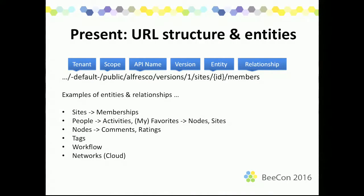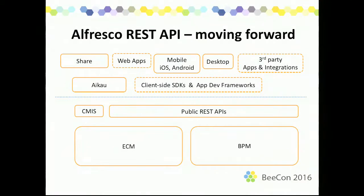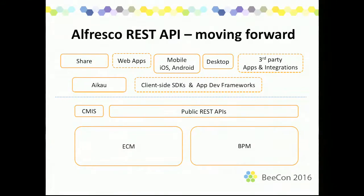Here's a summary slide of the high-level box architecture — ECM on the left and BPM on the right, with public REST APIs moving forward across both. On the client side there are options for client-side SDKs and an AppDev framework. There are Share, iCal, and other applications — both web-based, mobile, and desktop, including desktop sync. And very importantly, third-party applications and integrations.